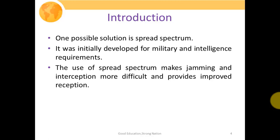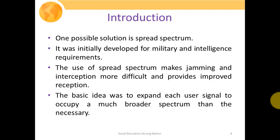It was mainly developed for military and intelligence requirements so that those communication systems would not get affected by any means. Since their information is very crucial, it should also not be intercepted by unintended users. The basic idea is to expand each user's signal to occupy a much broader spectrum than the necessary one — we expand or increase the individual narrowband user's signal to a much wider spectrum or bandwidth. This is actually called the spreading of the signal.